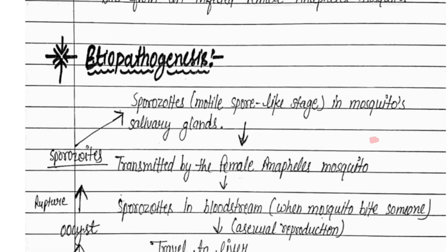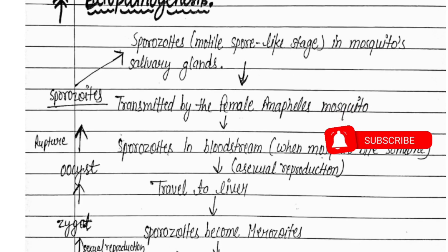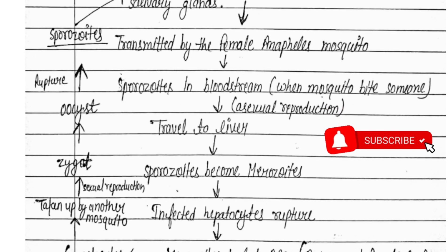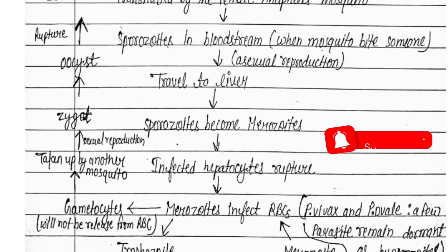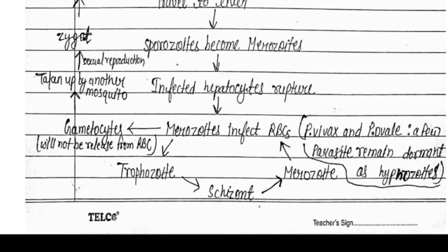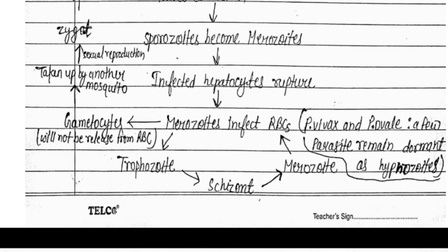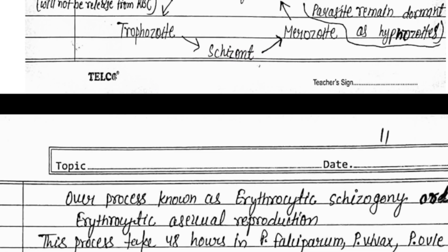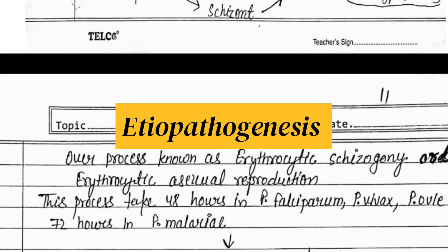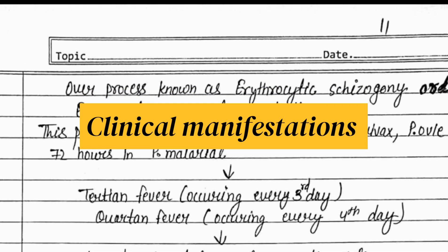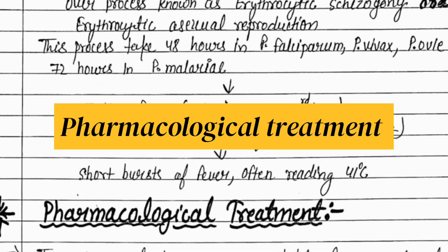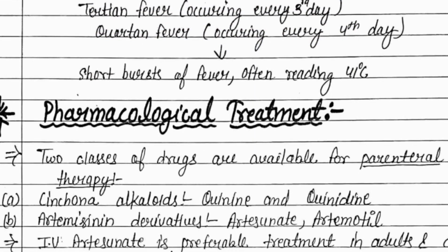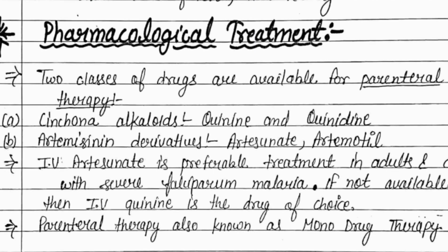Make sure to hit the subscribe button and turn on the notification bell so you don't miss any of our upcoming videos. Please stay in the video if you want this assignment PDF. We have covered the definition, etiopathogenesis, clinical manifestations, pharmacological treatment, and non-pharmacological treatment of malaria. These topics are covered from different sources to make this assignment the best for you.